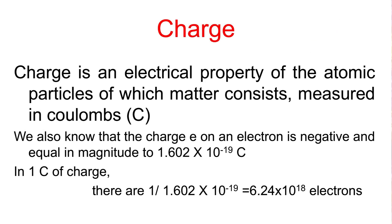Charge is an electrical property of the atomic particles of which matter consists, measured in coulombs (C). We also know that the charge e on an electron is negative and equal in magnitude to 1.602 multiplied by 10 power minus 19 coulombs. In 1 coulomb of charge, there are 1 divided by 1.602.